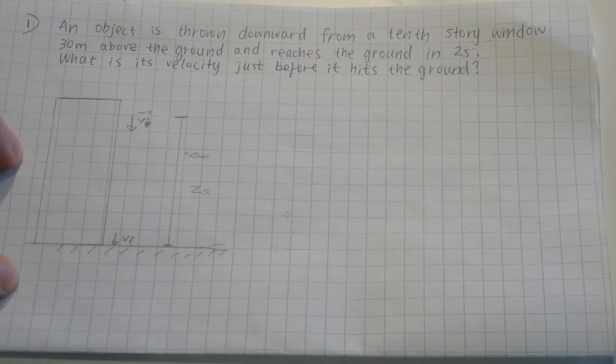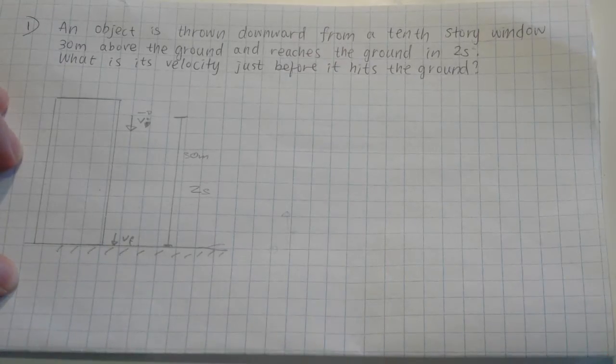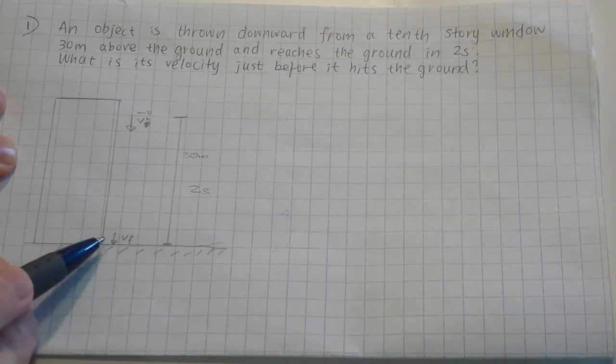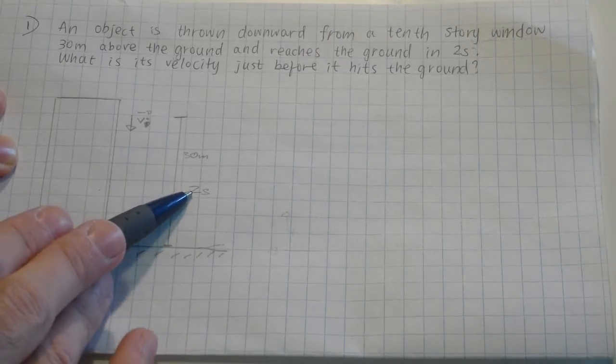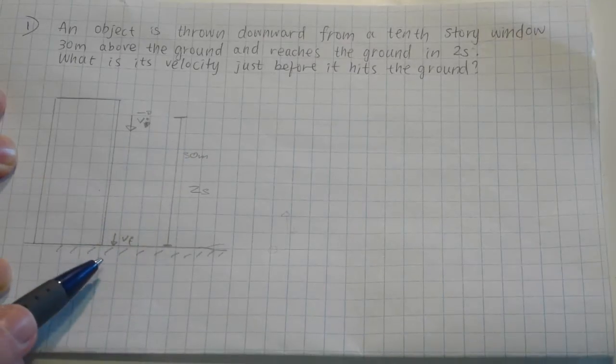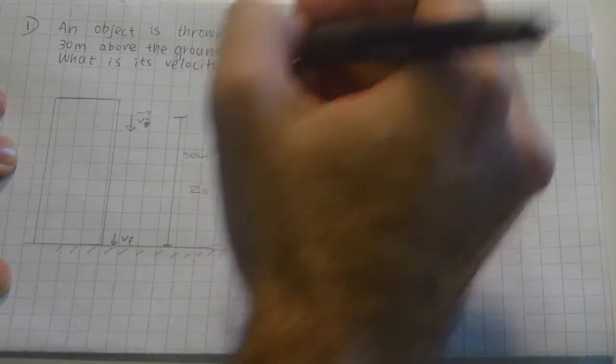There are actually two ways of solving this. First, we can look at the formulas and find the formula which has in it time, position, and v-final. Here actually is one.